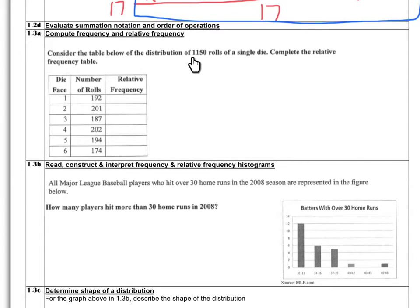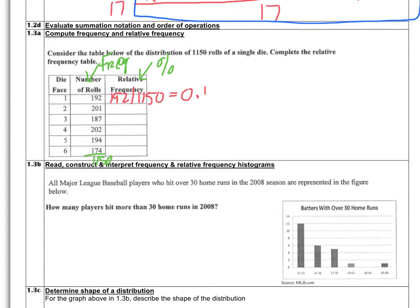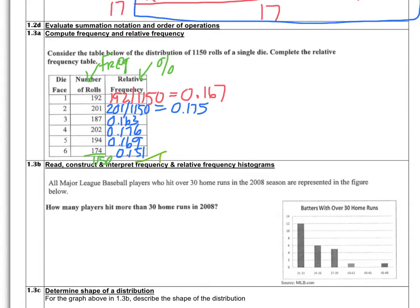For 1.3a, we compute frequency and relative frequency. Consider a table of the distribution of 1,150 rolls of a single die. The count column is called frequency. Relative frequency means the percent of the total. For rolling a 1, the relative frequency is 192 out of 1,150, which gives a decimal of 0.167. For rolling a 2, it's 202 out of 1,150, giving 0.175. If you add up all relative frequencies, they equal 100% or the whole.